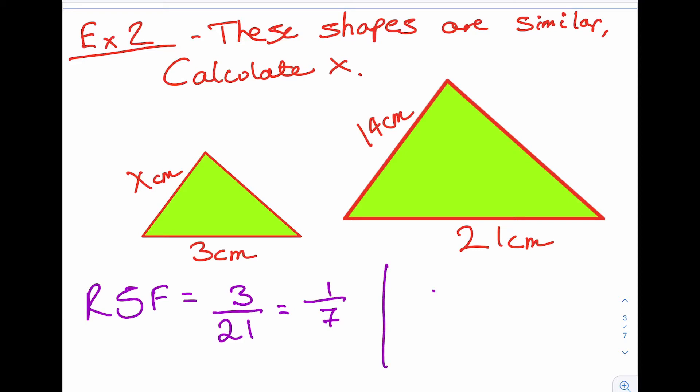That means that X equals a 7th times the corresponding side in the big triangle. So 14 is the same as the X. So X times a 7th times 14 or a 7th of 14 is 2 centimeters. Notice with scale factors, a reduction scale factor is a 7th.